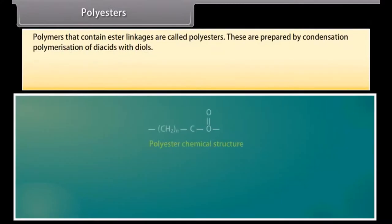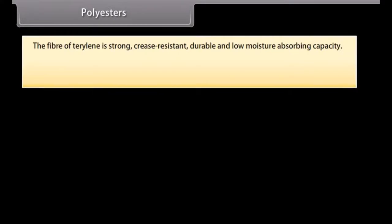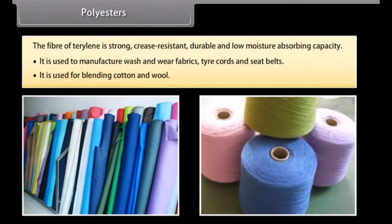Polyesters are polymers containing ester linkages, prepared by condensation polymerization of diacids with diols. Terylene (Dacron) is prepared by condensation polymerization of ethylene glycol and terephthalic acid at about 420–460 K in the presence of a catalyst consisting of zinc acetate and antimony trioxide. The fiber of Terylene is strong, crease resistant, durable, and has low moisture absorbing capacity. It is used for wash-and-wear fabrics, tire cords, seat belts, and for blending with cotton and wool to increase resistance to wrinkles and wear.